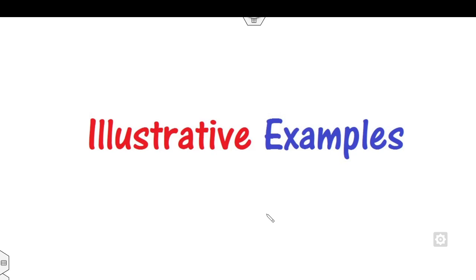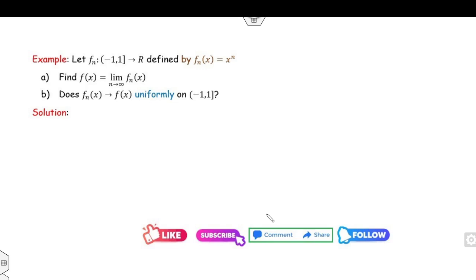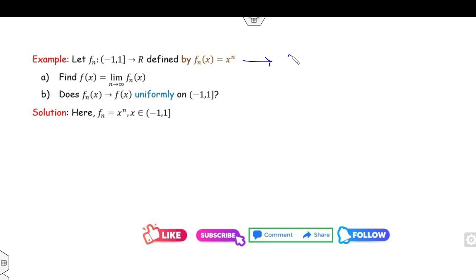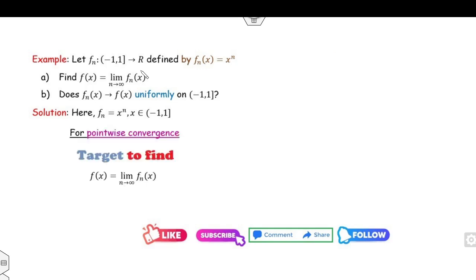Now I will explain the method with certain examples. Let fn be a sequence defined on the interval (−1, 1] by a given formula. The first part asks about pointwise convergence and the second about uniform convergence. For pointwise convergence, we find the limit of fn(x) as n → ∞. I already solved this same example in my previous lecture on uniform convergence, and now I will solve it using the MN test.